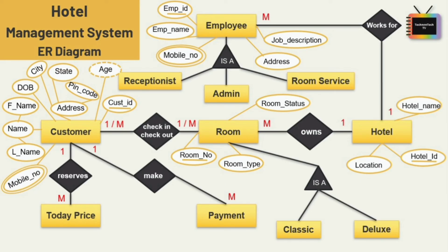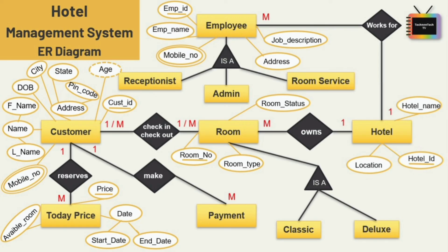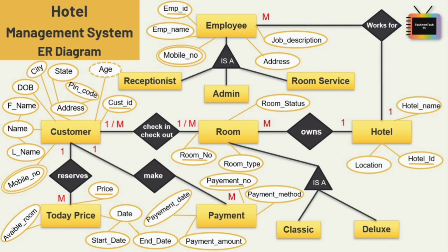Next is the entity today price, which is used to check the price of a room according to the customer's selected date. I am adding three attributes: price, available room, and date — and price is the key attribute. The last entity is payment, for which I have added four attributes: payment number, payment method, payment date, and payment amount — and payment number is the key attribute.